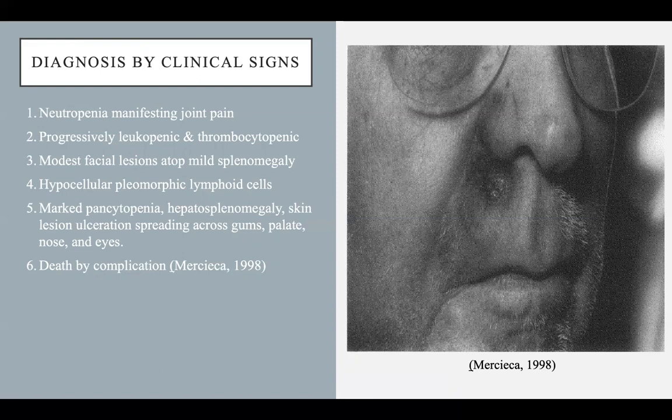We're still responsive to CHOP chemotherapy at this point in time. Issues arise as that hypocellularity progresses into a pancytopenia despite the chemotherapy. At this stage we're probably seeing hepatosplenomegaly and skin lesion ulceration spreading across to the gums, palate, nose, and eyes. Ultimate death is likely by sequelae or complication — such as failure to recover from anesthesia due to liver damage, or lobar pneumonia despite high-dose steroids. Unfortunately, it probably won't be pretty.